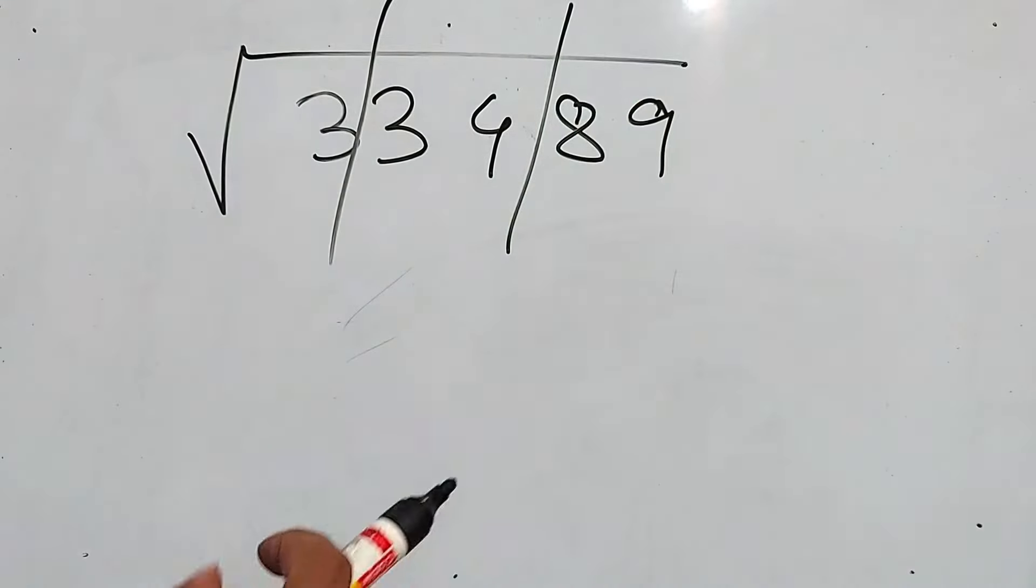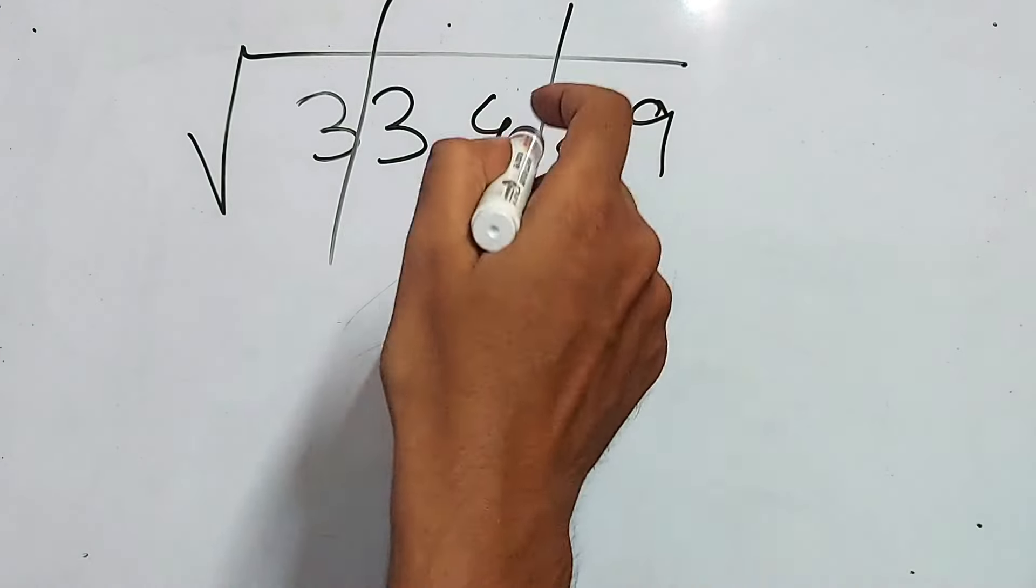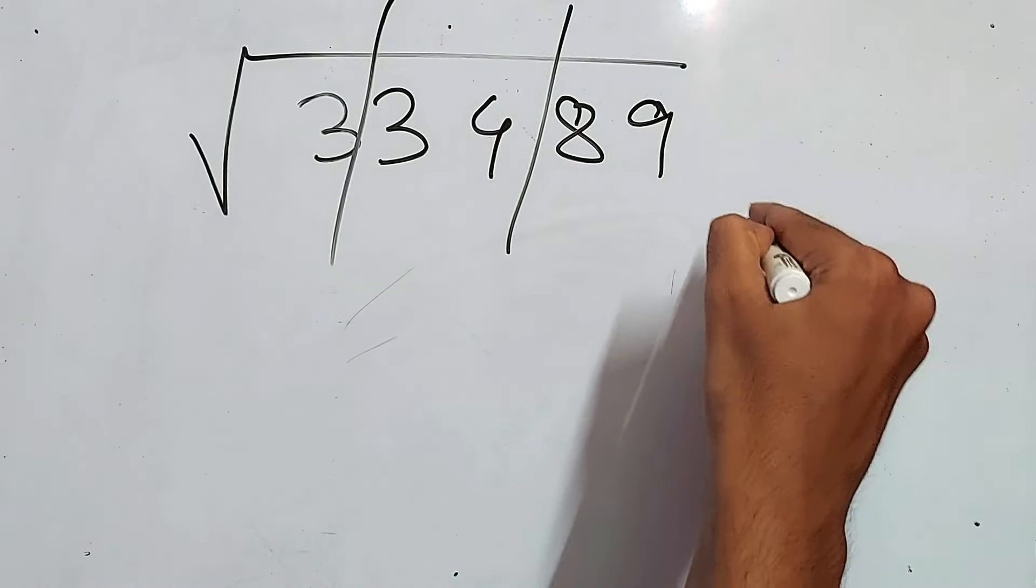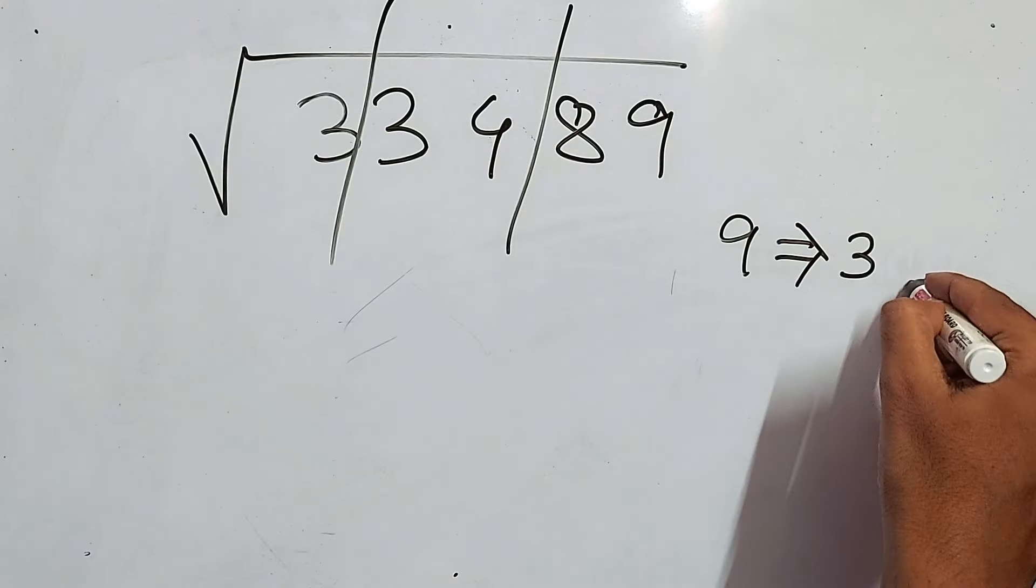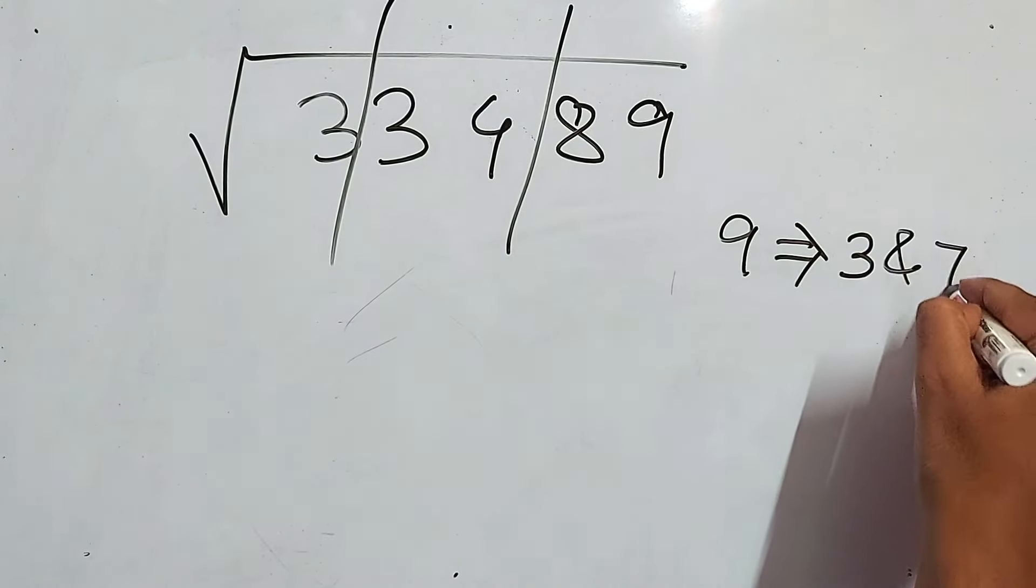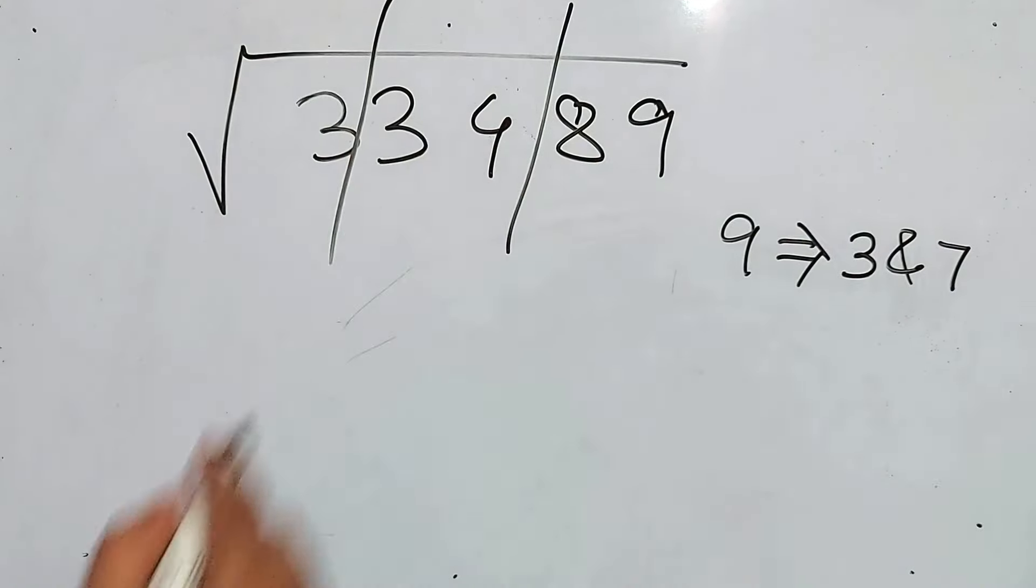Now, let's work with this 9. In case of 9, 9 belongs to 3 and 7. Next number is 4. In case of 4, 4 comes in case of 2. 2 × 2 is 4.